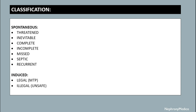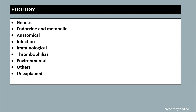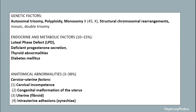Induced abortion includes legal or illegal. Legal is MTP, which means medical termination of pregnancy, and illegal is unsafe. The etiology includes genetic, endocrine and metabolic, chemical, infection, immunological, thrombophilias, environmental, and unexplained factors. Genetic factors that cause abortion include autosomal trisomy, polyploidy, monosomy, and structural chromosomal rearrangements.